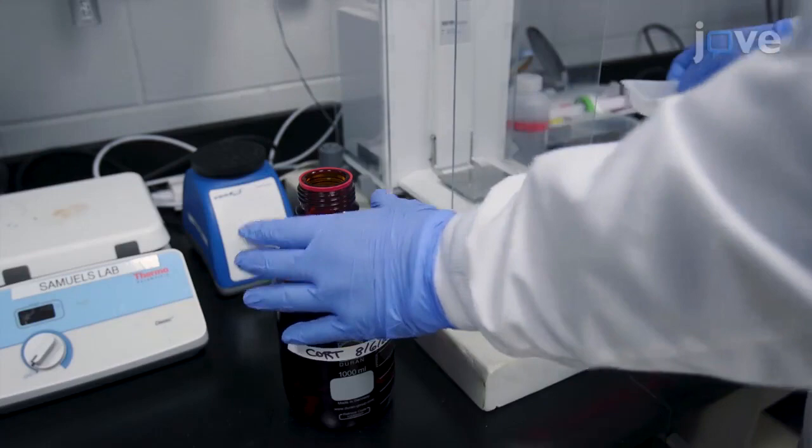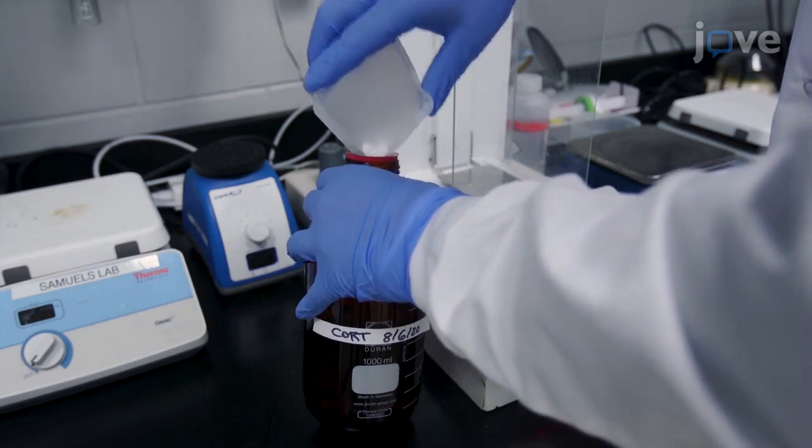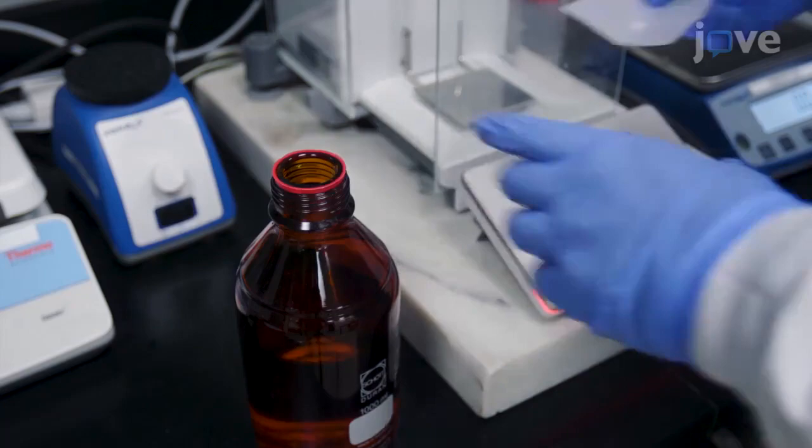To prepare the corticosterone solution, dissolve 3.375 grams of beta-cyclodextrin in 750 milliliters of tap water, followed by the addition of 26.25 milligrams of corticosterone.